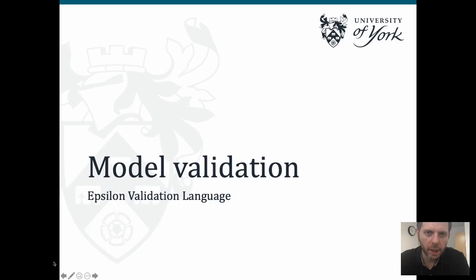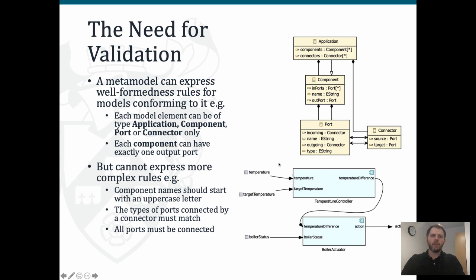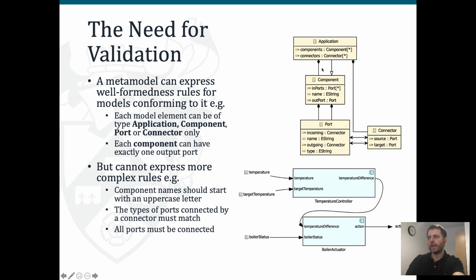We saw how we can query models using EOL. Now we're going to move on to model validation. In terms of the Epsilon architecture, we're now moving to EVL, the model validation language, which sits on top of EOL. Why do we need additional validation? A meta model itself can express well-formedness rules for models conforming to it. For example, in our model we can only have instances of Application, Component, Port, and Connector because these are the four types provided by our meta model - we are constrained by the meta model, which is a good thing.